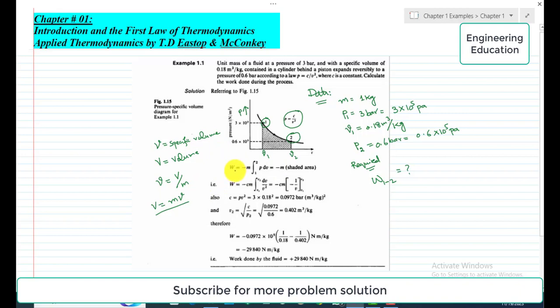We have the expression for work done: W is equal to minus M integral from 1 to 2, P dV. This is basically the shaded area in this diagram.